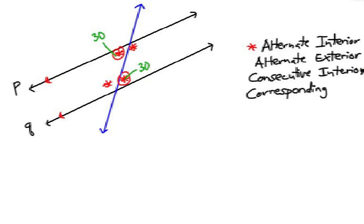What about alternate exterior angles? Let's say that we put a blue square next to alternate exterior angles. Where are they? There's one there and there's one there, outside of the two parallel lines and on alternate sides of the transversal. The other pair would be here, and I'm going to use a colored-in blue square for that. What do you know about alternate exterior angles? They're also congruent to each other. So if this angle was 28 degrees, this angle here would be 28 degrees.